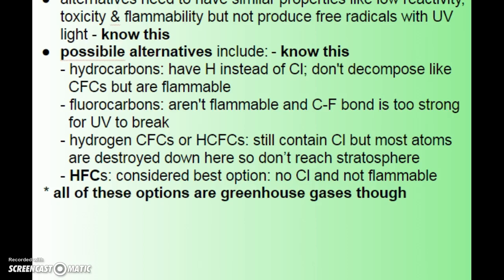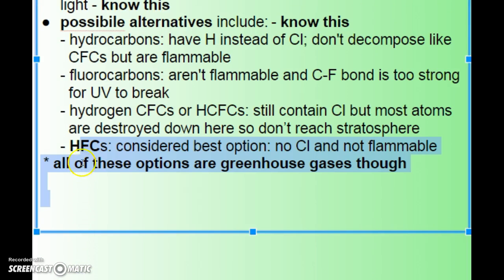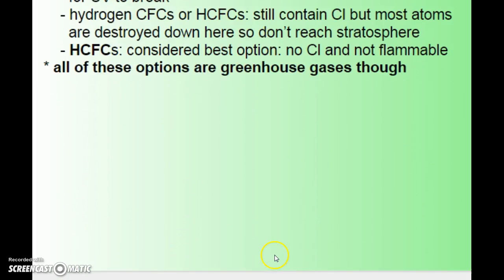Fluorocarbons aren't flammable, and the C–F bond is too strong for UV to break, making them a pretty good alternative. HCFCs (hydrogen CFCs) still contain chlorine, but most of the molecules are destroyed down in the troposphere so they don't reach the stratosphere — making HCFCs the best option at this point. The big problem is that regardless of which option you go with, you're still making more greenhouse gases, so there's another issue there. That is it for sections 3 and 4 on greenhouse gases and ozone depletion.